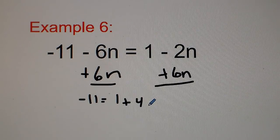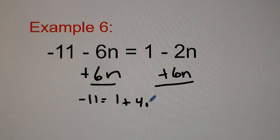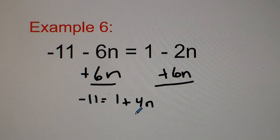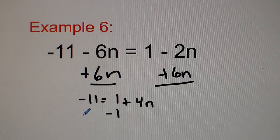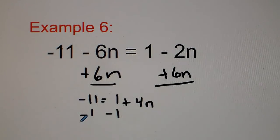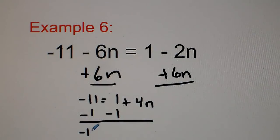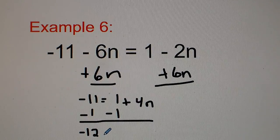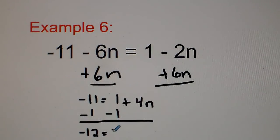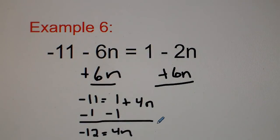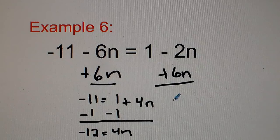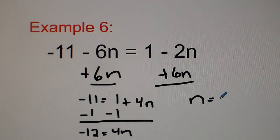For example number 6, combining like terms: negative 2n plus 6n gives positive 4n. Subtract 1 from both sides and we get negative 12 equals 4n. Divide both sides by 4 and we get n equals negative 3.